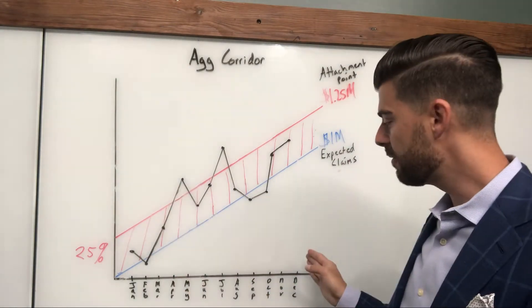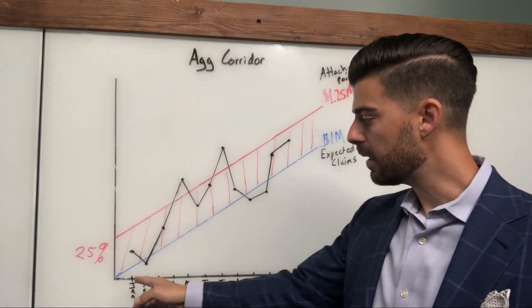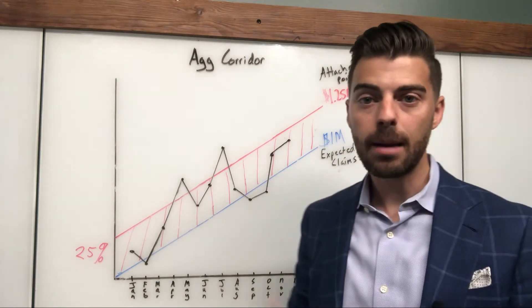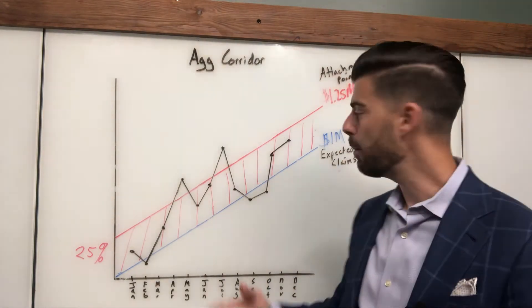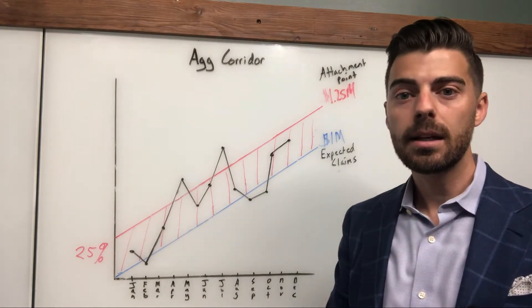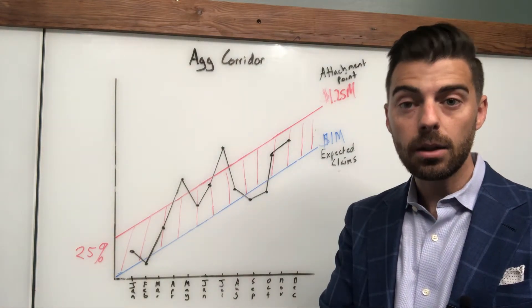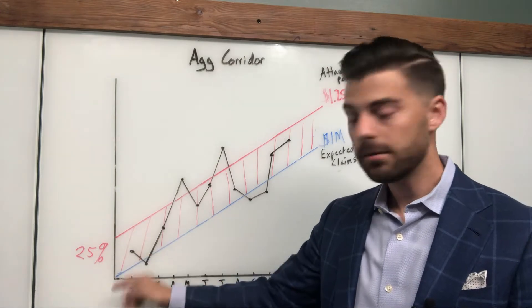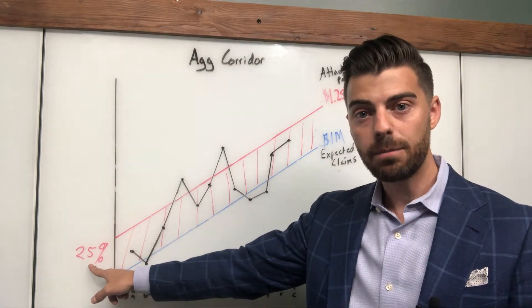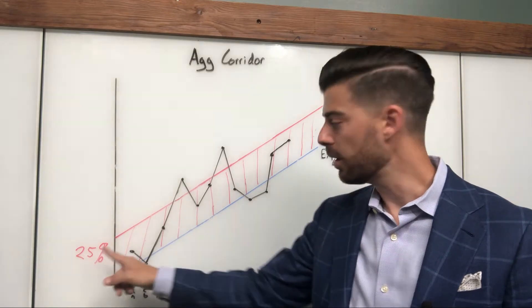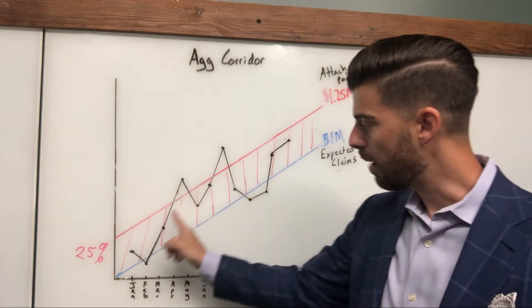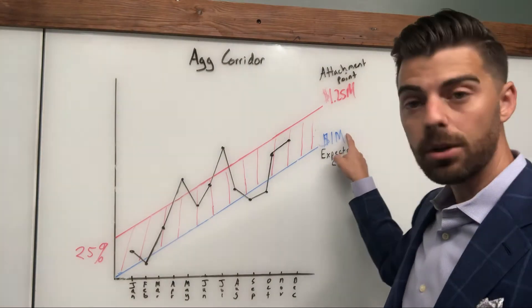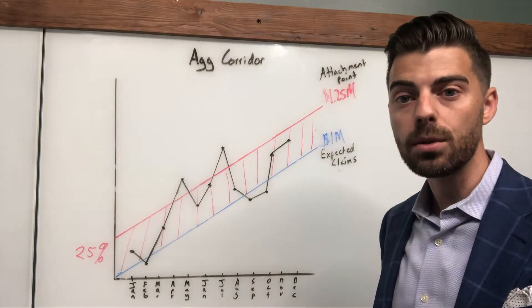In this graph, this is a year. We have all the months from January through December. The blue line is expected claims. In that previous video, I referenced an easy number to remember: let's say the insurance carrier calculates the employer's expected claims to be $1 million. They are then going to put on a buffer. Most common is 25%, so they put on a 25% buffer, also known as the aggregate corridor, this space in between, which I highlighted with red lines, which gets us to an attachment point. $1 million plus 25% is $1.25 million.